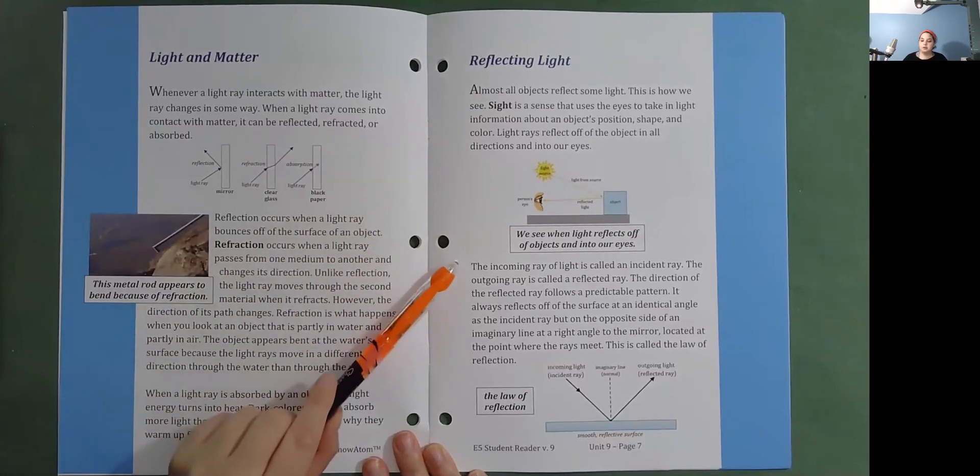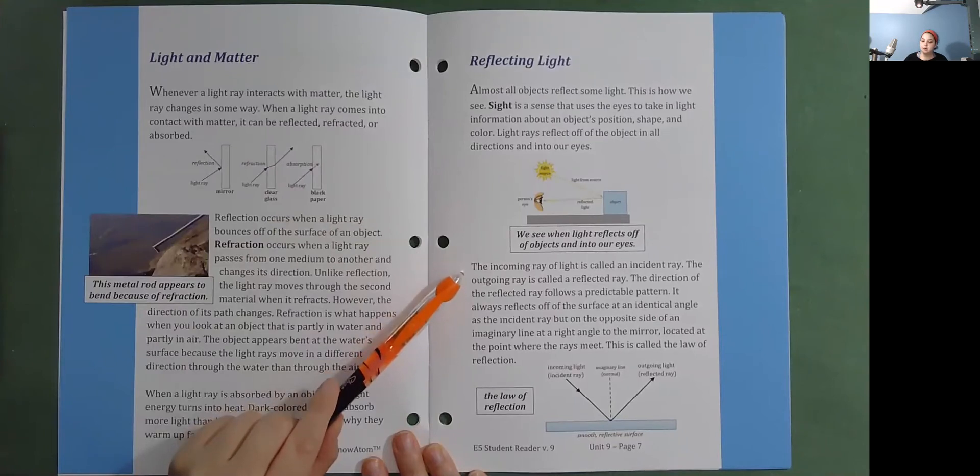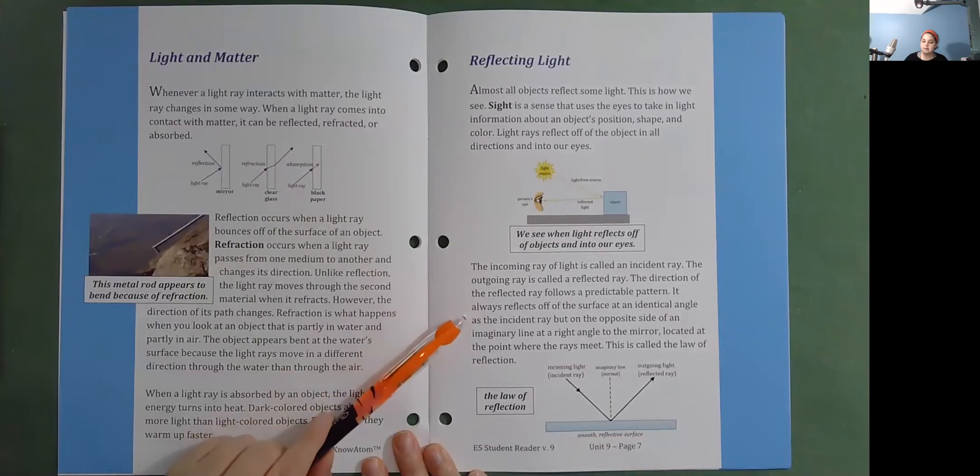The incoming ray of light is called an incident ray. The outgoing ray is called a reflected ray. The direction of the reflected ray follows a predictable pattern. It always reflects off of the surface at an identical angle as the incident ray, but on the opposite side of an imaginary line at a right angle to the mirror.